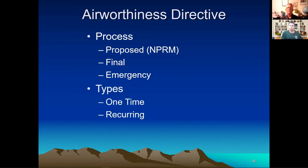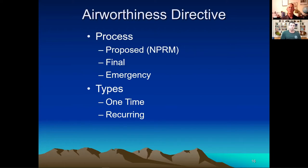There are a couple of types of ADs: one-time and recurring. A one-time AD applies when there's something you can replace — once you put in the known-good part, the AD is done and goes away. A recurring AD means you have to keep doing it indefinitely. For example, some older Mooneys have a propeller hub that requires an eddy current inspection every year — that's a recurring AD. If you replace that hub with a newer propeller, the AD is complete and you don't have to worry about it anymore.